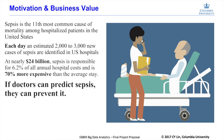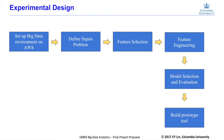To predict sepsis, we set up a big data environment on Amazon Web Services. We then defined our positive and negative labels of sepsis — we had about 60,000 cases in total. We performed feature extraction on six different tables from an EHR dataset, electronic health records. We then performed feature engineering, feature selection, and model selection, training many different classifiers, then built and evaluated our prototype.